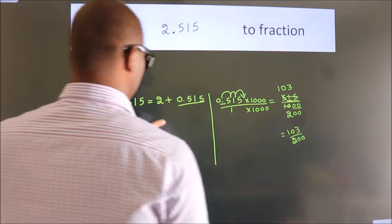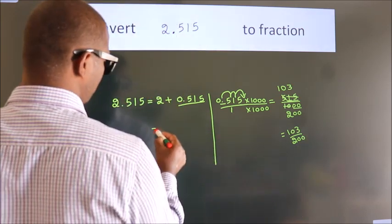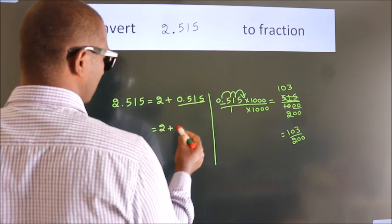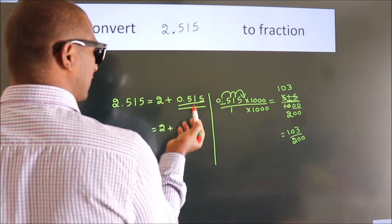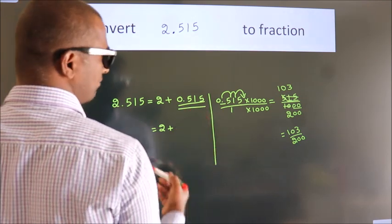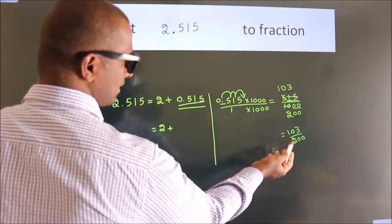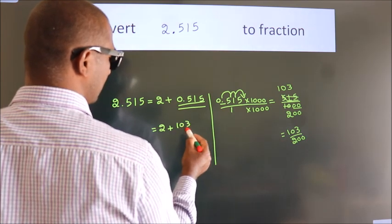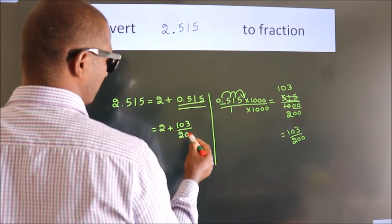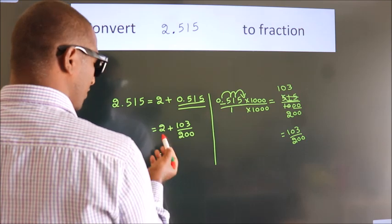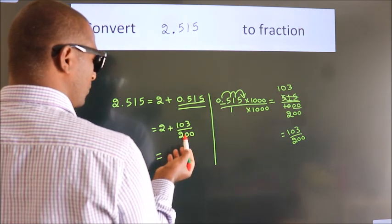Now here, 2 plus in place of 0.515, now we write this fraction 103 by 200. 2 plus 103 by 200.